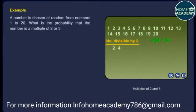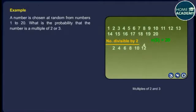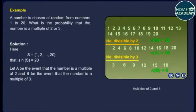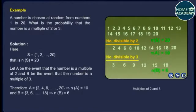Example. A number is chosen at random from numbers 1 to 20. What is the probability that the number is a multiple of 2 or 3? Solution. Here S = {1 to 20}, so N(S) = 20. Let A be the event that the number is a multiple of 2 and B be the event that the number is a multiple of 3. Therefore A = {2, 4, 6, ..., 20}, so N(A) = 10, and B = {3, 6, ..., 18}, so N(B) = 6.